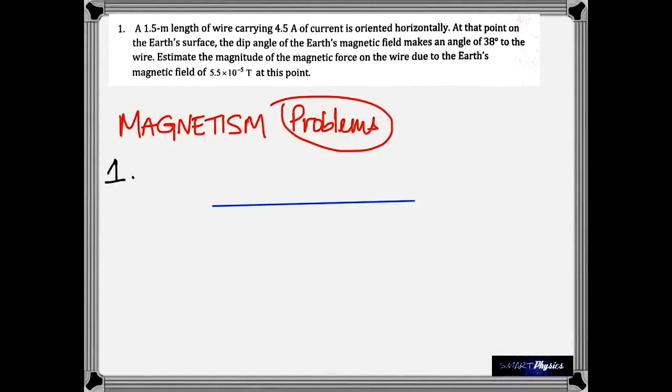Here it's a 1.5 meter long conductor carrying 4.5 amperes of current. It's horizontal and the earth's magnetic field is making an angle of 38 degrees to the conductor. We got to find the force. So you need to think about, this is a current carrying conductor kept in a magnetic field. And so the formula for force is BIL sin theta.